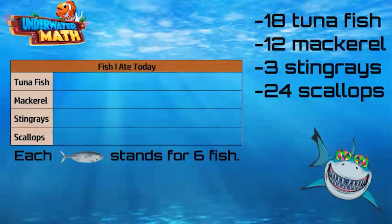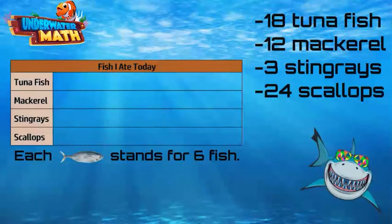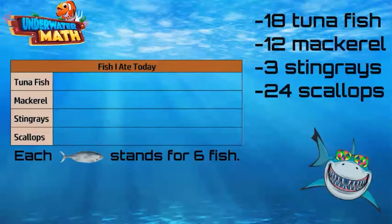Sounds delicious! The three is half of six, so we will be able to use half a fish picture to represent those three stingrays when we get there. So for 18 tuna fish, let's count by sixes until we get to 18: six, twelve, eighteen — so we need three fish pictures for the tuna fish.